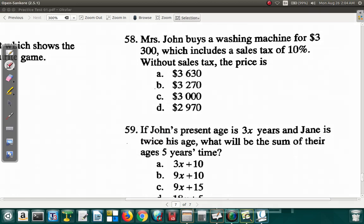Let's say the price was X. She buys a washing machine for $3,300. It includes a sales tax of 10%. If it wasn't the sales tax, it should be less than $3,300. This is out. Can't be more. It would have to be less. So it's either B, C, or D.